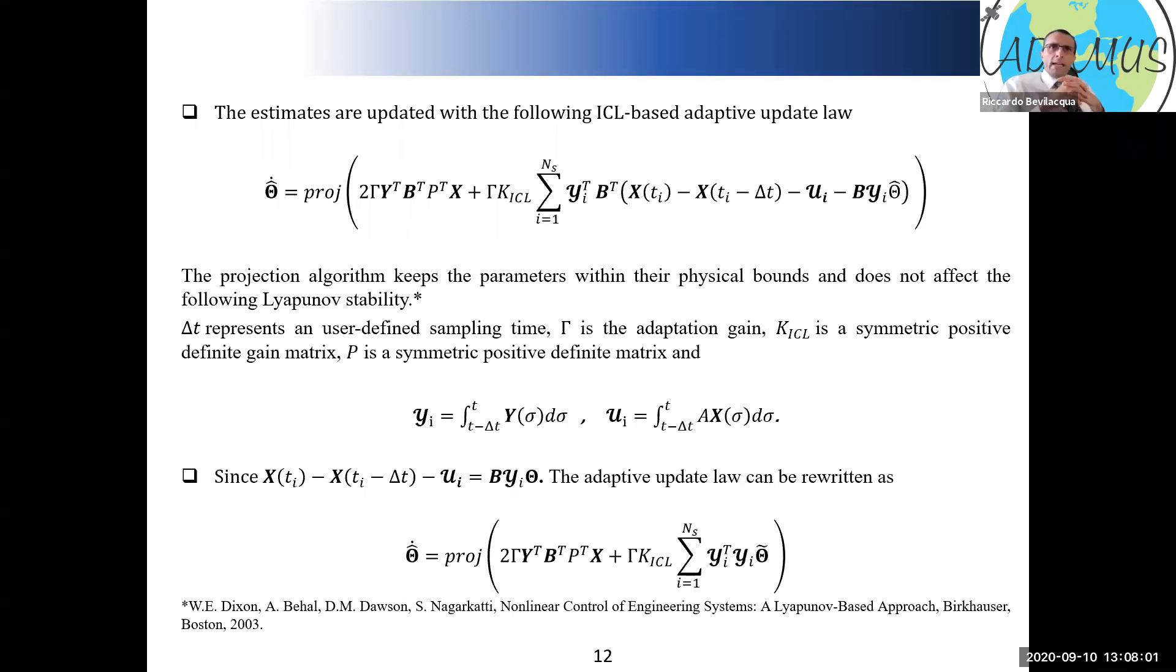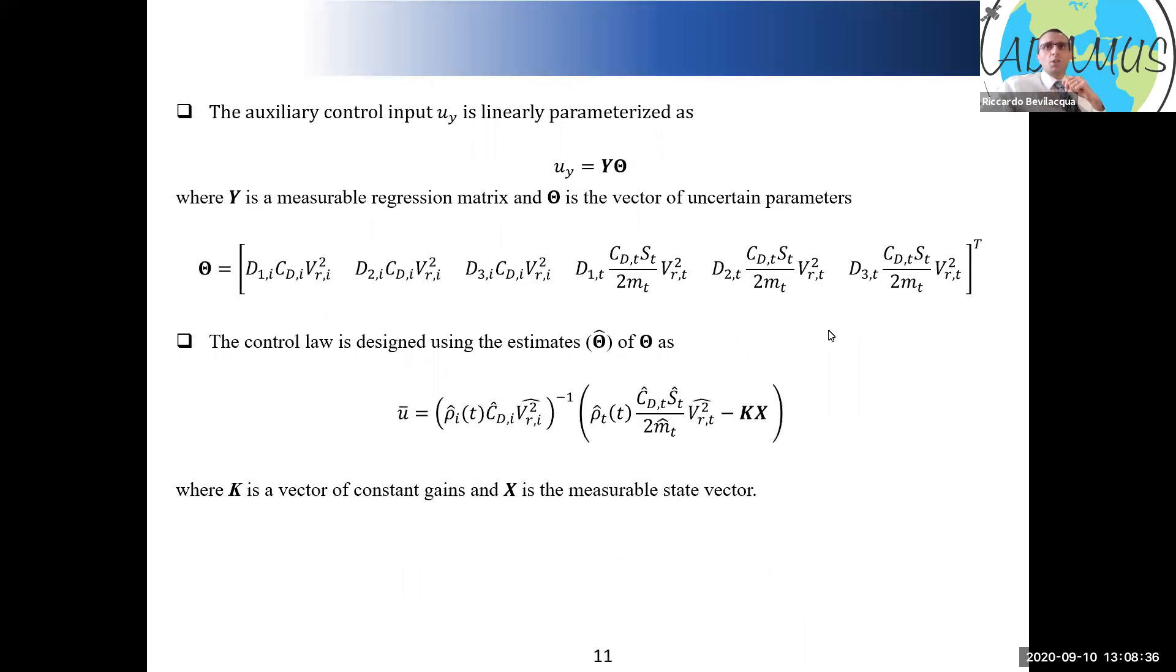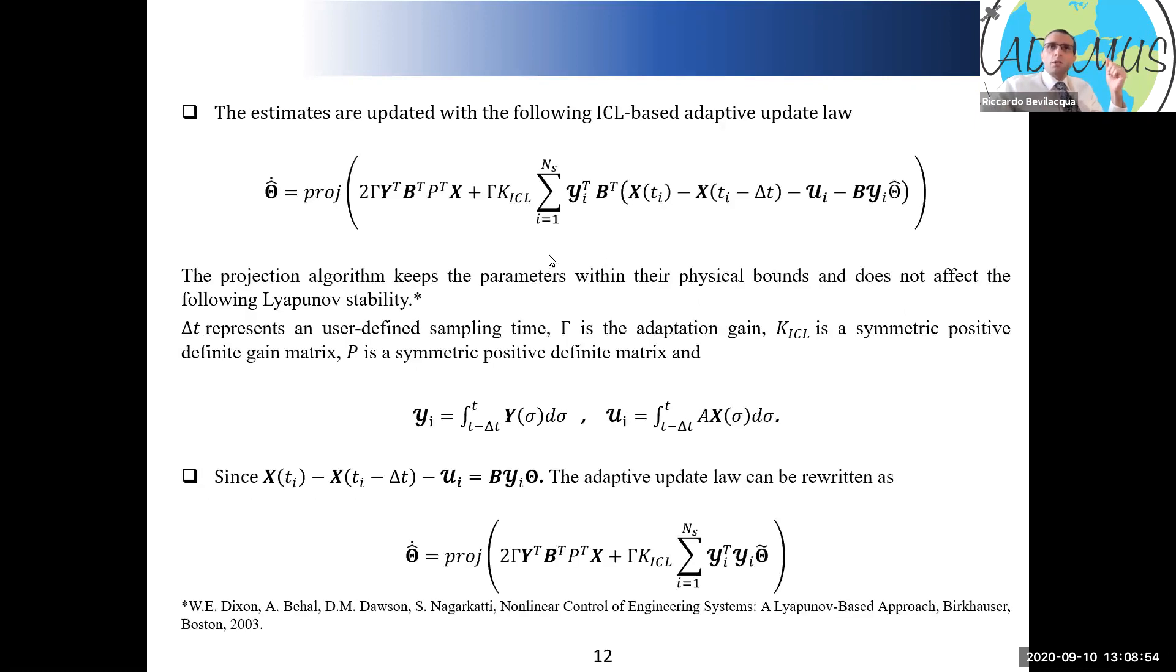And finally, the adaptation law. Theta hat dot is my adaptive law. What's in this expression? First of all, the projection algorithm. It's basically checking the value of your parameter theta at the current time, the value of the theta dot that is proposed by the adaptation, and it's making sure that the parameters remain within physical bounds. We do know what the physical bounds of these quantities are. We don't know what exactly they are, but we know reasonable values, bounds for theta. It's been proven that the stability analysis that will follow based on the Lyapunov theory is not affected by this algorithm.